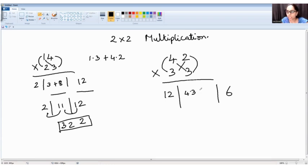4 x 3 plus 2 x 3. So it is 12. 4 x 3 is 12 plus 6 and 6. So 12 plus 6 is 18. So your answer has 3 parts.